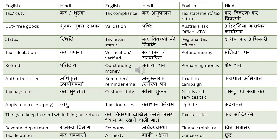Tax or duty is translated as 'kar' or 'shulk'. Duty-free goods: 'shulk mukt saman'. Status: 'sthiti'. Tax calculation: 'kar ganana'. Refund: 'prathidai'. Authorized user: 'adhikrut upyog karta'.